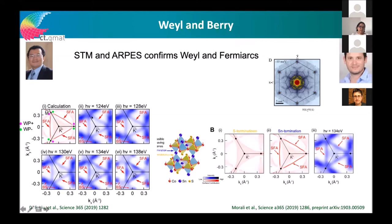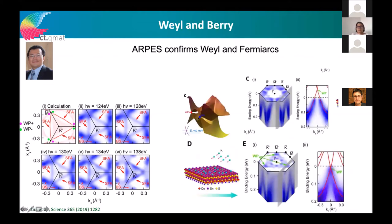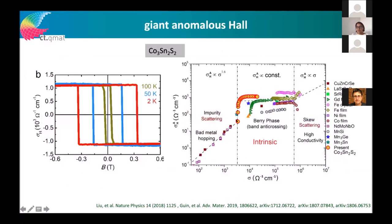Bin Hai and Yan Sun calculated the Fermi arc surface states, and Julian Chen measured them with ARPES — nicely showing the surface states in this material. Surface states at both the tin and sulfide terminations were observed by STM. The Weyl points are slightly above the Fermi energy in this compound, so potassium doping was needed to bring the Weyl crossing below the Fermi energy.